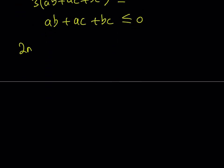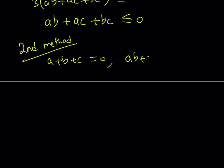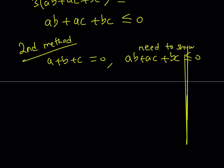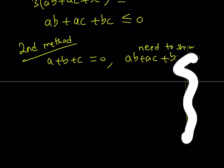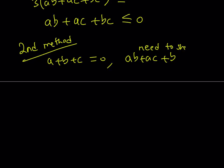Let's go ahead and talk about the second method. The second method is obviously different. We're given that a plus b plus c is equal to zero, and we're supposed to prove that ab plus ac plus bc is less than or equal to zero.